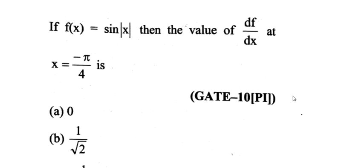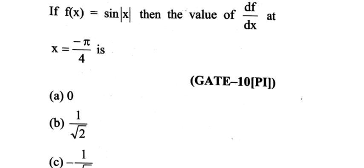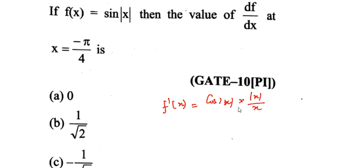Next: a function f(x) is given. Find the value of the derivative of f at x = -π/4. We know the differentiation of sin(x) is cos(x). But here, sin|x| is given. So f'(x) = cos|x| · (|x|/x).